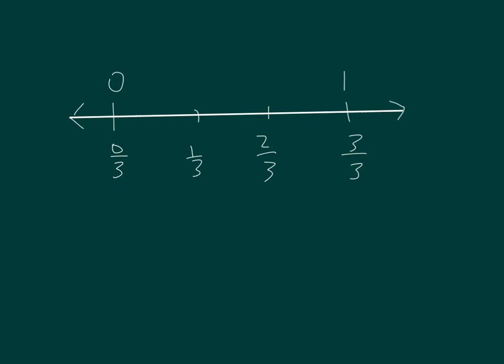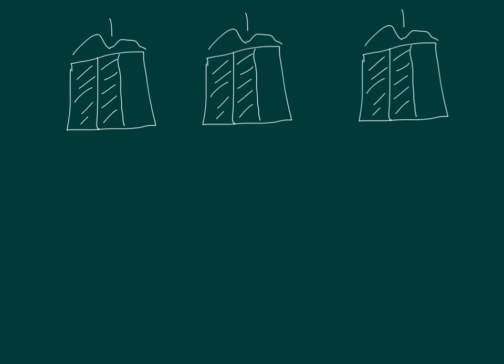We just looked at making equivalent fractions for 1 third. Now we're going to look at making equivalent fractions for 2 thirds. Okay, here is an area model for 2 thirds, where we took a whole, drew 2 vertical lines to divide it into 3 parts, and shaded in 2 of those 3 parts for 2 thirds.